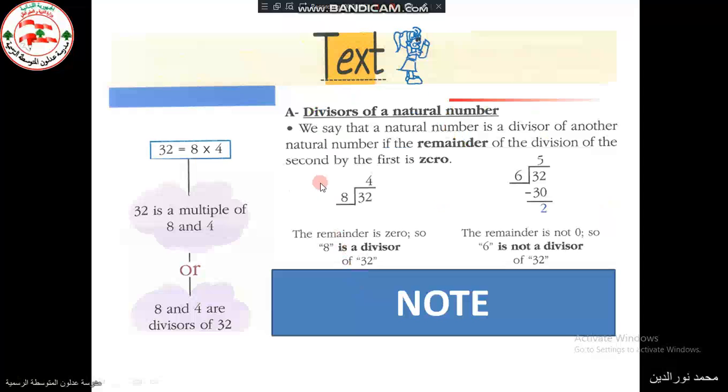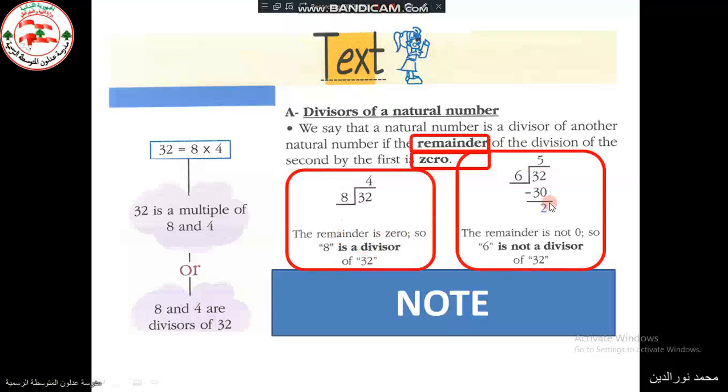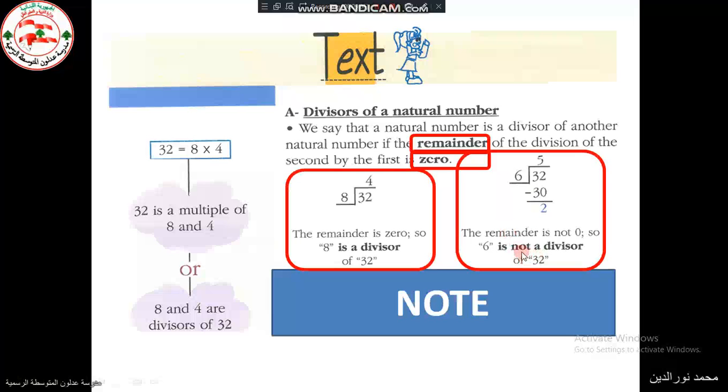So we say that a number is divisible of a natural number if the remainder of the division was 0. In this case, here, the remainder is 0. Then 8 is divisible of 32. The other case, we have 2 remainders. So 6 is not divisible of 32.